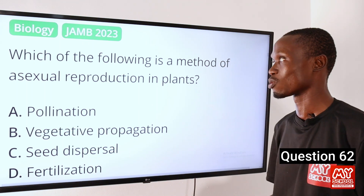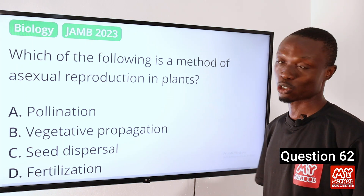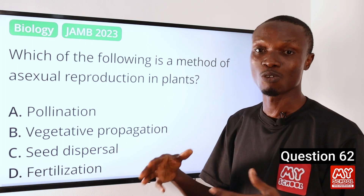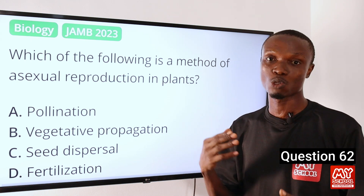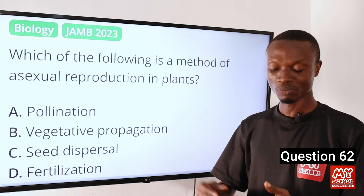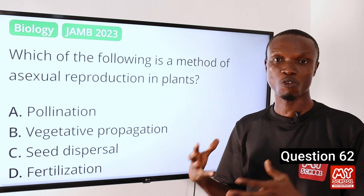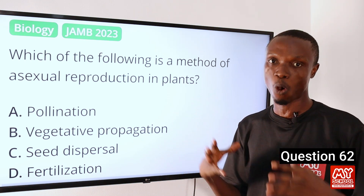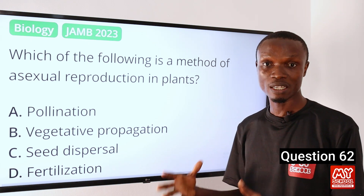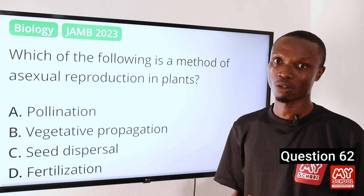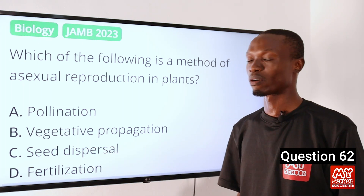Vegetative propagation is a method of asexual reproduction in plants. It involves the production of new plants from vegetative structures such as stem, leaves, and roots, without involvement of seed or spore. This allows plants to produce genetically identical offspring to the parent plant. So that makes option B the correct option.